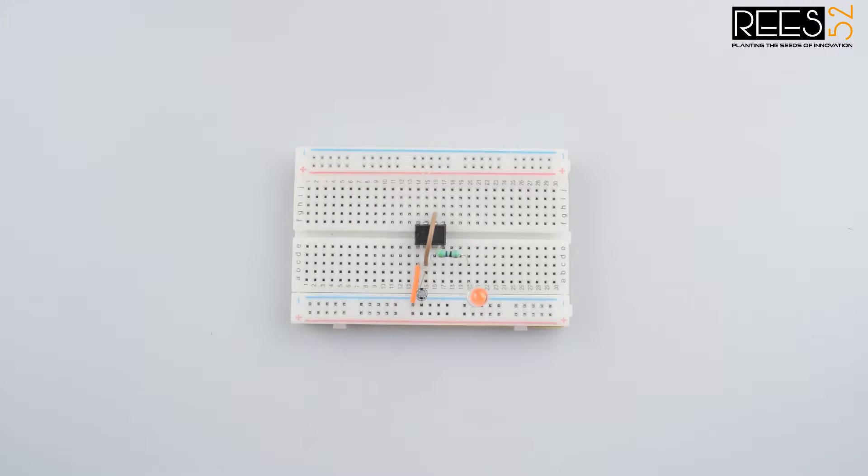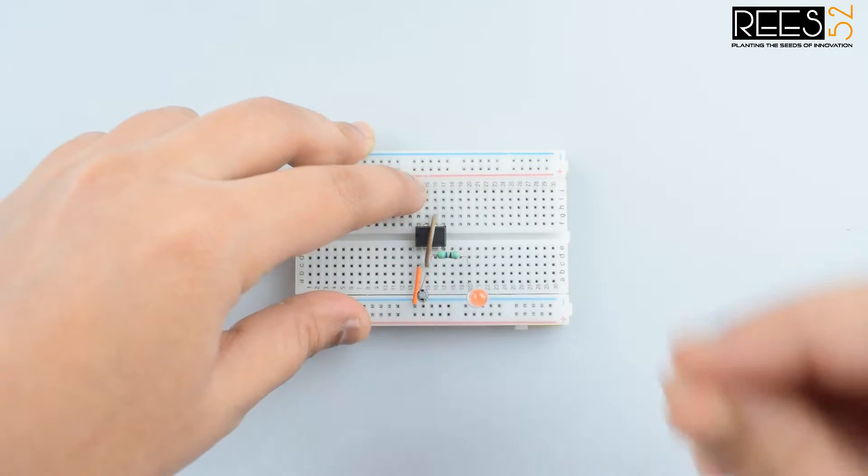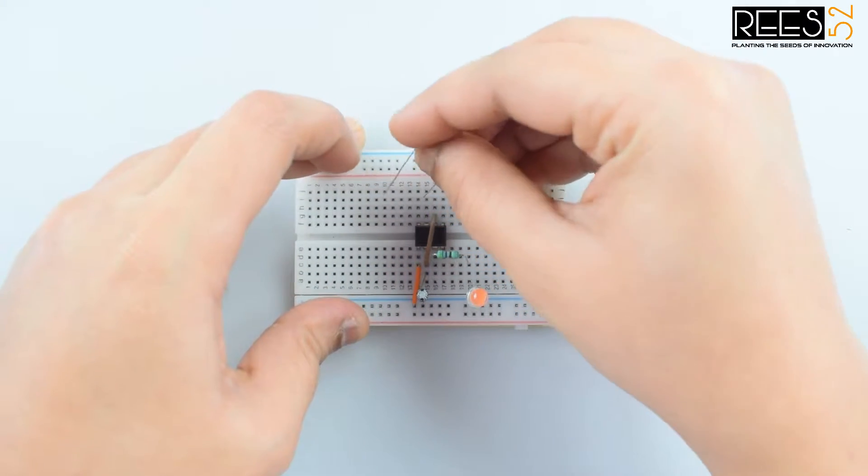Now connect pin 8 of the 555 timer IC to pin 7 via a 1 megaohm resistor.